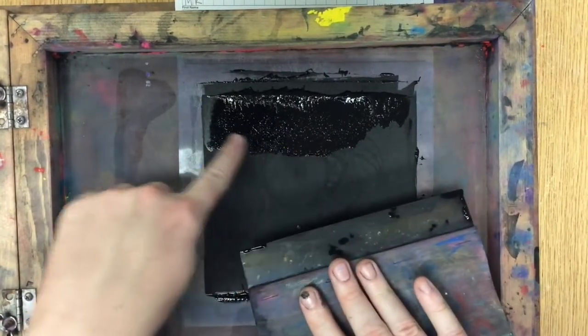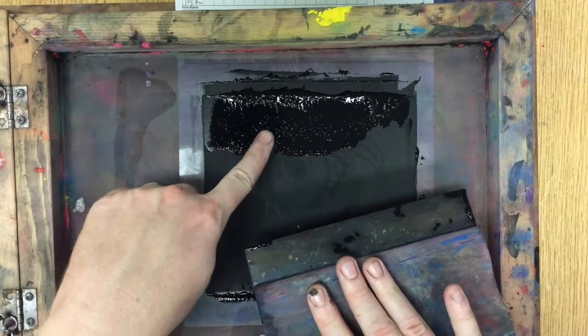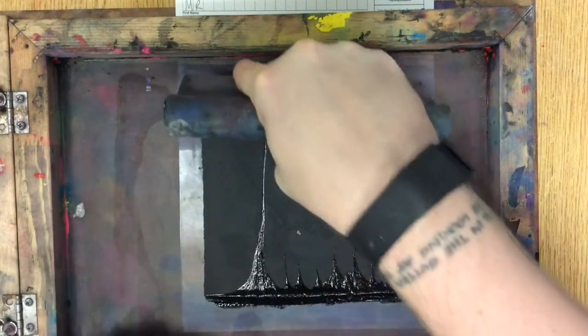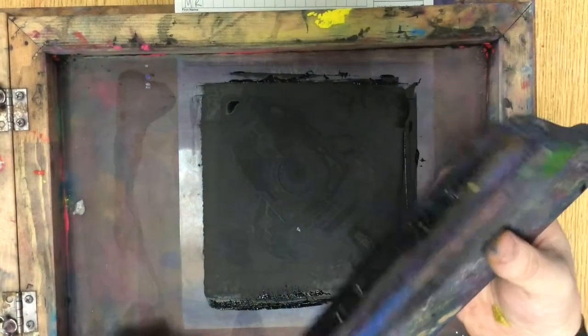If it looks smooth like this, that is a bad sign that the ink is just sliding around on top. When I drag it, I should be able to see the contours of my stencil, my design, so that I know it is going through.